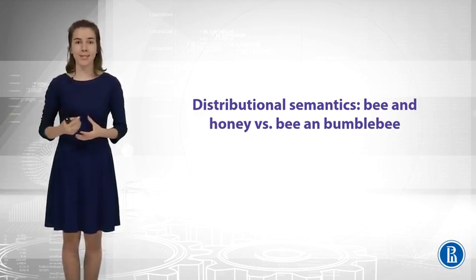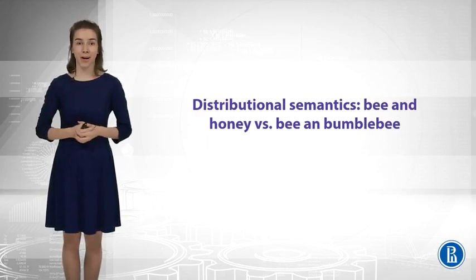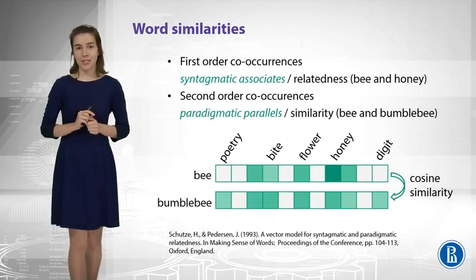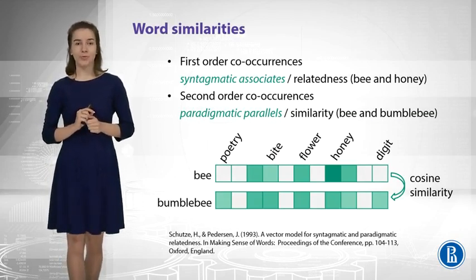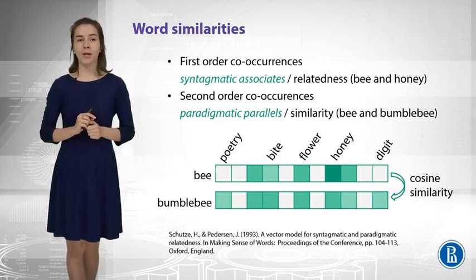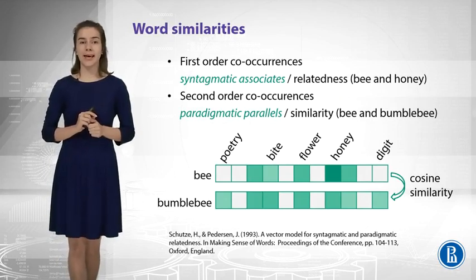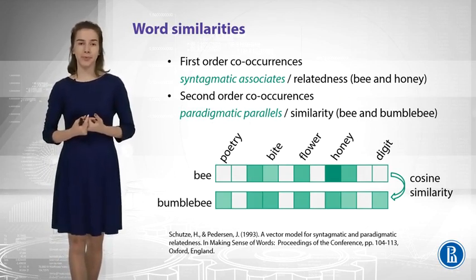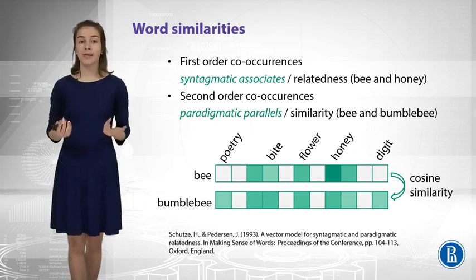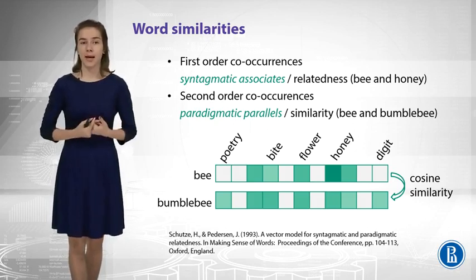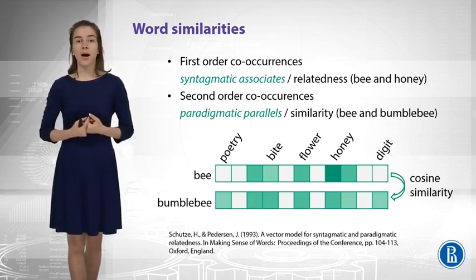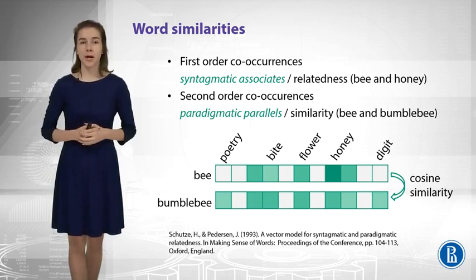This is what we are going to cover right now. For example, we want to understand that bee and bumblebee are similar. How can we get that? Let us start with counting some word co-occurrences.